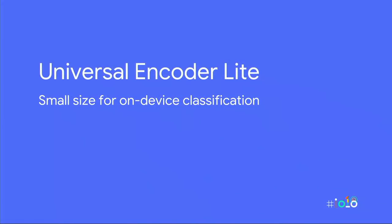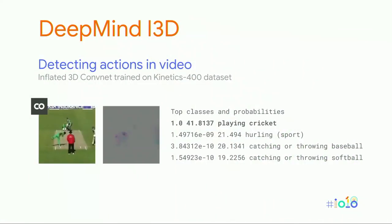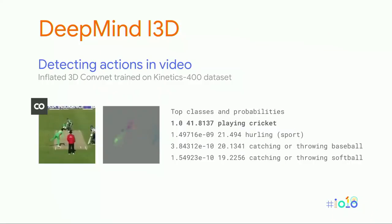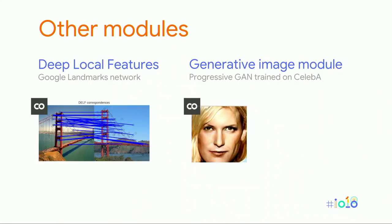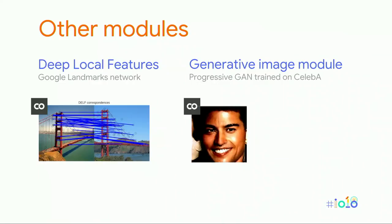The team just released a new light version of the universal sentence encoder — about 25 megabytes — specifically designed for on-device classification where the full module wouldn't work. Also today, we released a new module from DeepMind where you can feed in video and it will classify and detect actions in that video — correctly guessing, for example, that a video shows people playing cricket. We also have a generative image module trained on CelebA with a progressive GAN, and the deep local features module for identifying key points of landmark images.